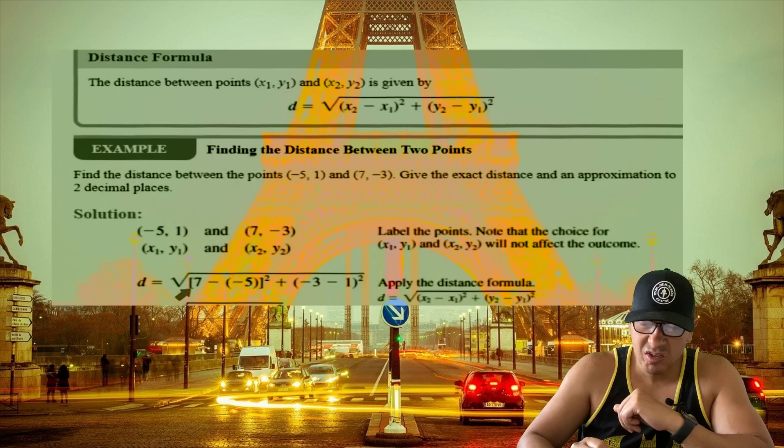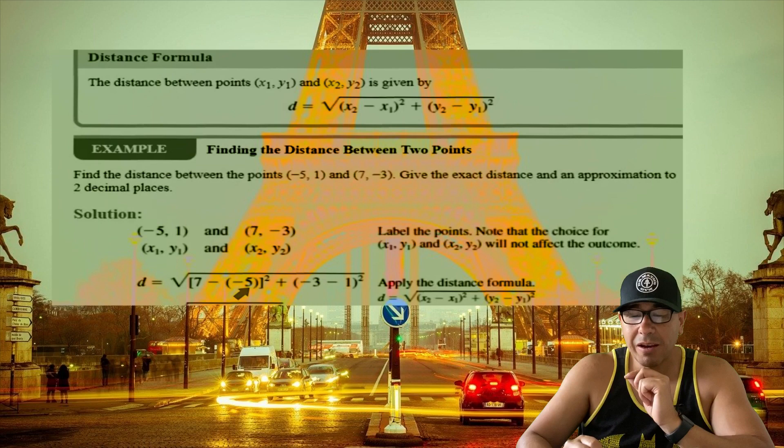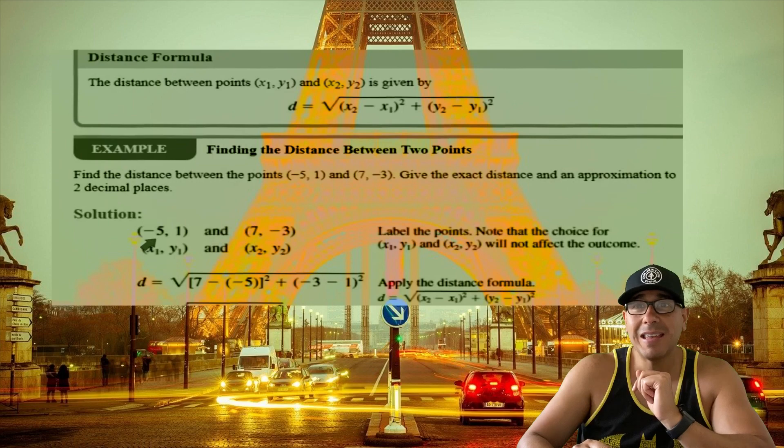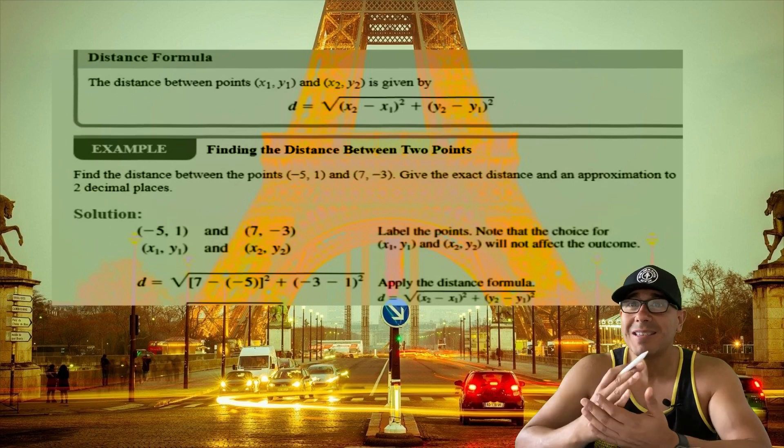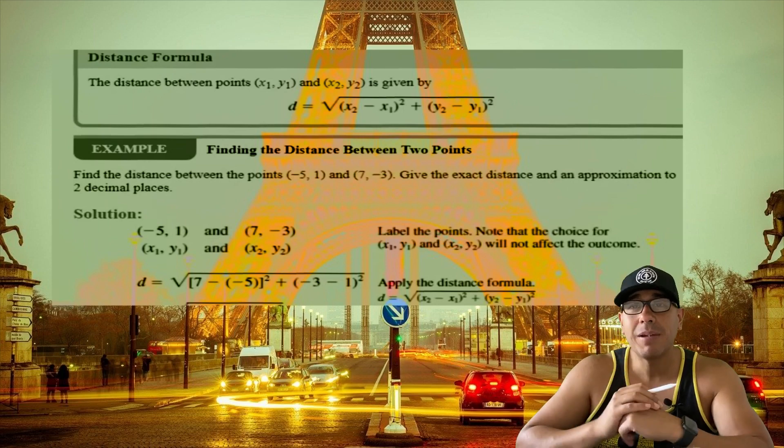Here we go. We have d equals the square root of x₂ minus x₁ squared. The reason I have parentheses here is because a lot of folks forget that this five was negative. Make sure you're a good user of those parentheses so you do not forget a negative sign. This is the biggest error that people make all the time.